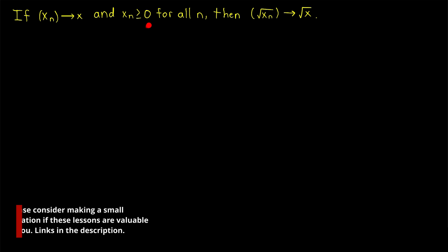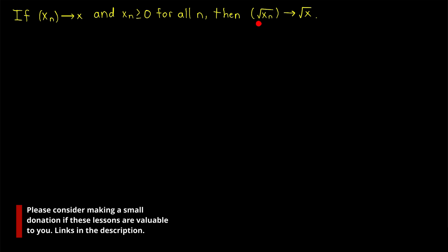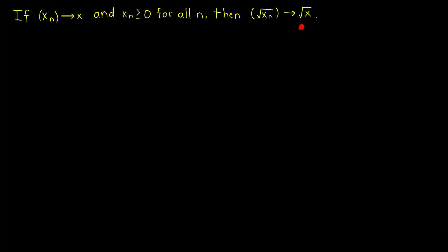We're going to prove that if a sequence of non-negative numbers converges to a limit, then the square root of that sequence converges to the square root of that limit. Since we're taking square roots in real analysis, every term of the sequence has to be at least zero so that the square roots are real numbers. We don't need to specify that the limit x is non-negative, because it's not possible for a non-negative sequence to converge to a negative number — so the limit x is definitely non-negative.